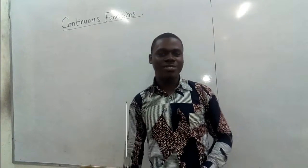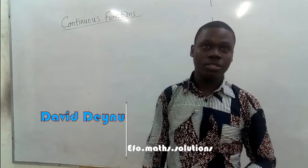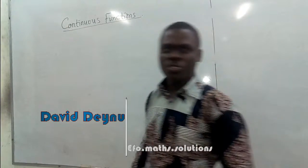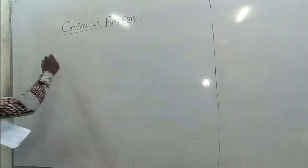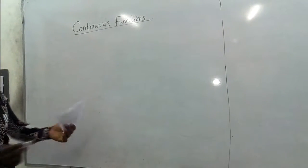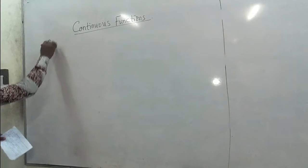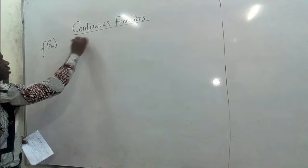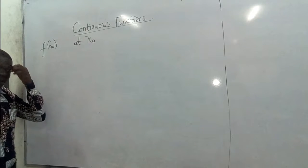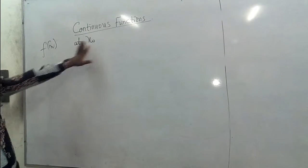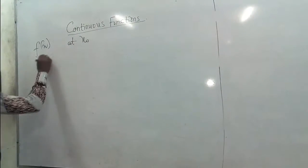Hello everyone and welcome to F1 Solutions. In today's video we want to look at continuous functions. When we say a function is continuous, we want to look at continuity at a point and continuity within an interval. If this function F of X is continuous at X naught, then we want to look at three conditions that must be satisfied.